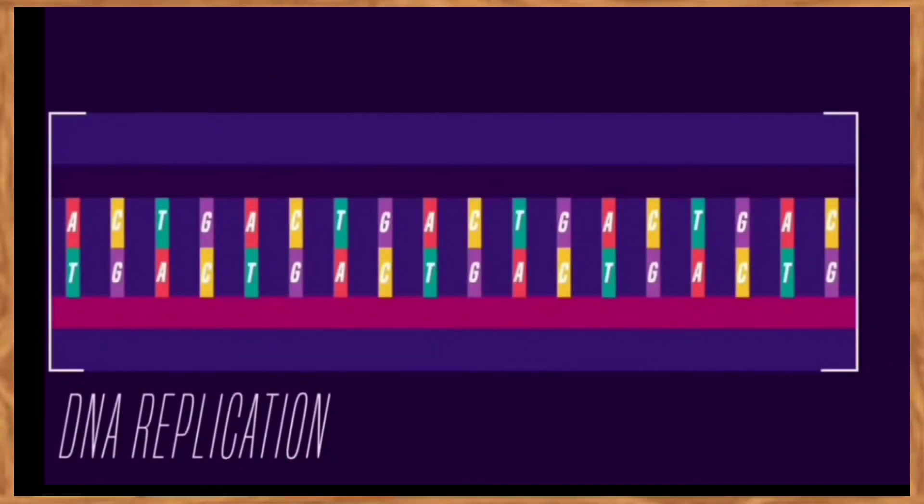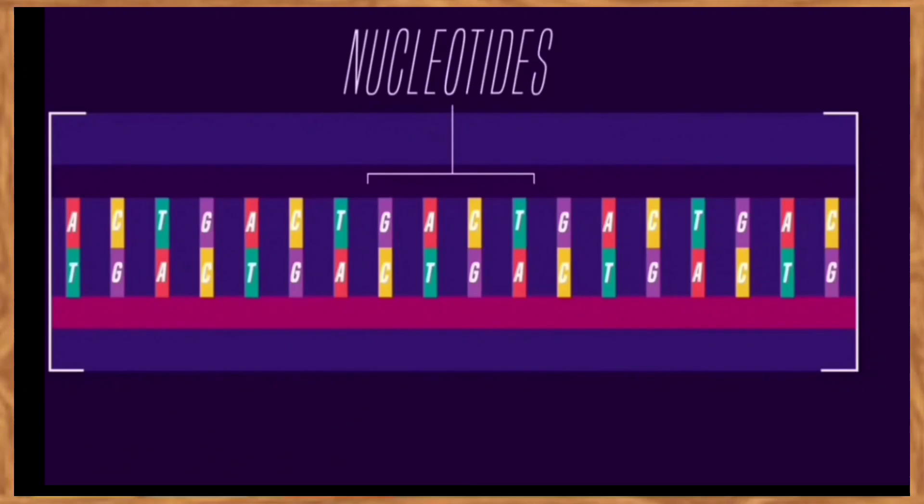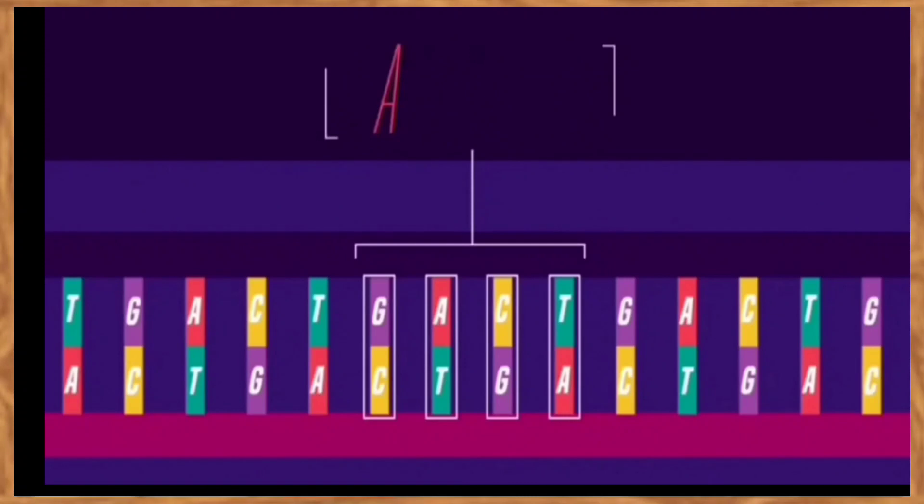Let's take a look at DNA replication. DNA is made up of many nucleotides, each containing a base represented by the letters A for adenine, T for thymine, C for cytosine and G for guanine. A piece of DNA contains two strands of nucleotides twisted together to form a double helix.